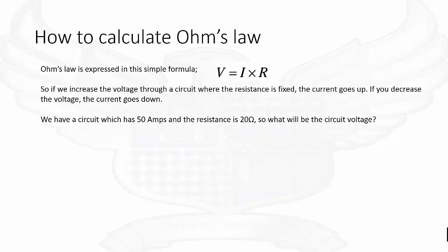If we increase the voltage through a circuit where the resistance is fixed, the current goes up. If you decrease the voltage, the current goes down.